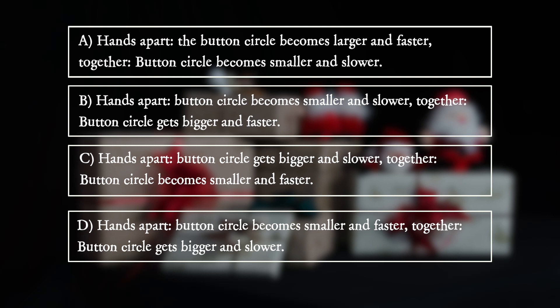D. Hands apart: button circle becomes smaller and faster. Together: button circle gets bigger and slower.